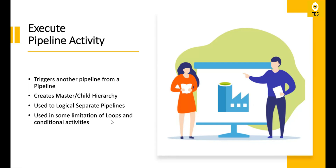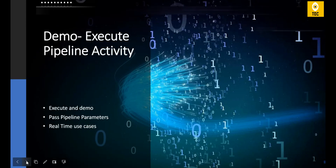In Azure Data Factory you cannot create a loop inside a loop. In those cases we can make use of Execute Pipeline activity. If we have a scenario requiring a for-loop inside a for-loop, we keep one for-each loop in the master pipeline and another for-each loop in the child pipeline. We call the child pipeline from within the one for-each loop in the master, thereby going around that limitation and still implementing a for-loop inside a for-loop.